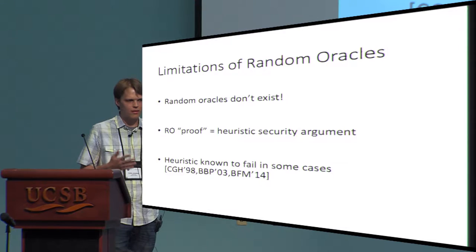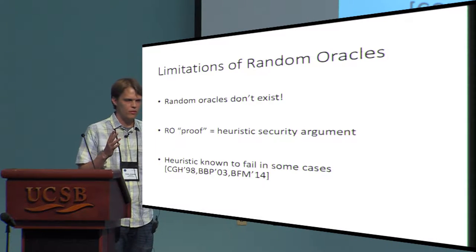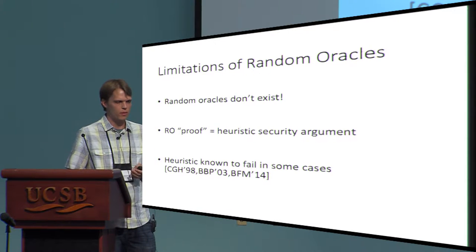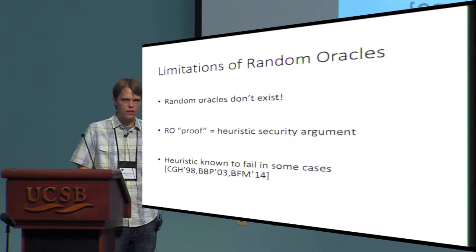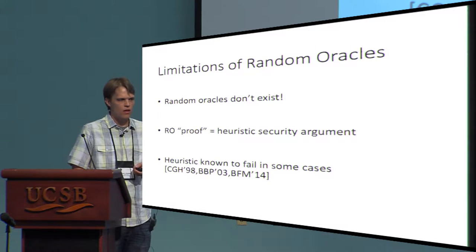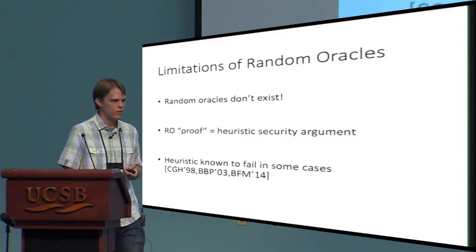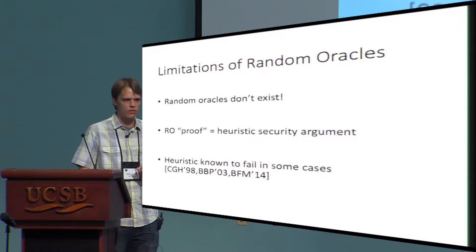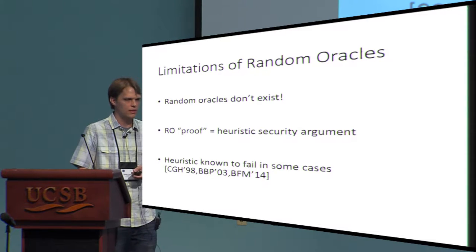Unfortunately, random oracles don't actually exist. There's no object in the sky containing a truly random function that people can query. Instead, everyone really does have the code for a hash function and evaluates it themselves. Therefore, a proof in the random oracle model is really a heuristic argument for security in the real world. And there's a sequence of work showing that this heuristic actually does fail in many settings.